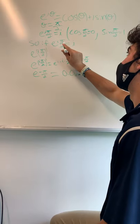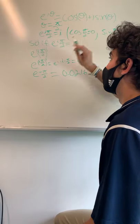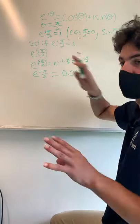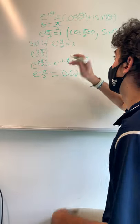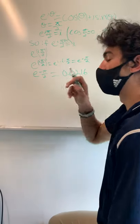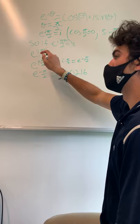So, if e to the i pi over 2 equals i, then if we bring the i over, because we want to get all our i's on the same side of the equation, we're going to bring our i over here, and that's going to give us e to the i pi over 2 to the i.